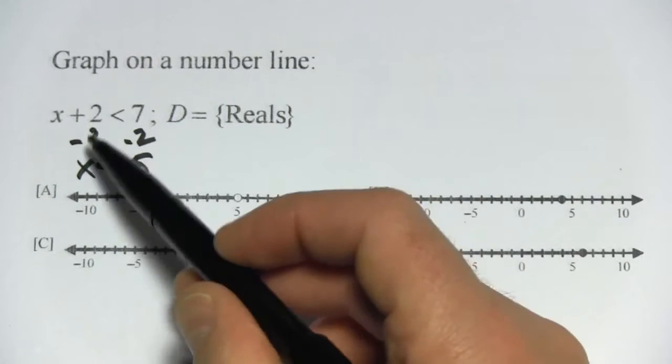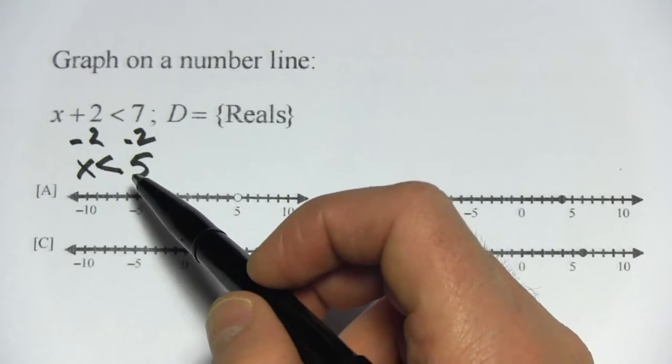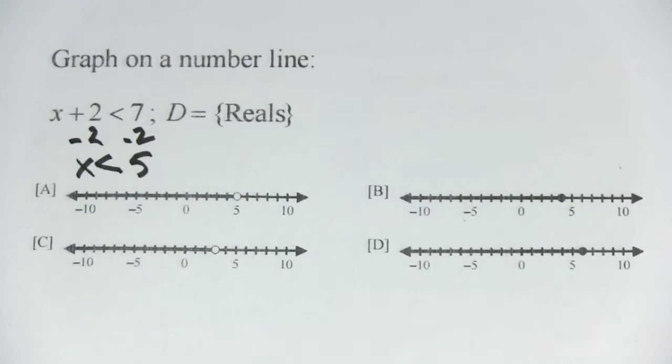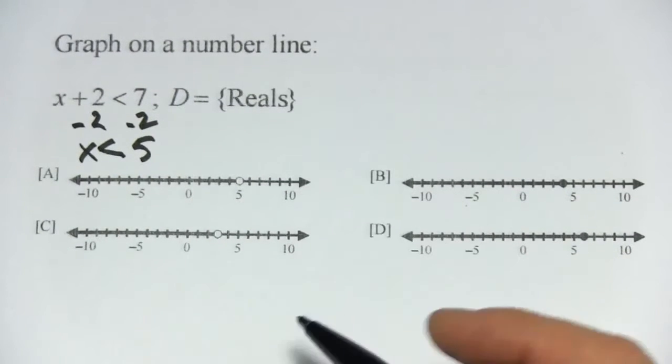You can do as much adding and subtracting as you want on either side of the inequality symbol. You only get in trouble if you try to multiply or divide by negative numbers. We'll get into that later. For right now, adding and subtracting to solve for x is totally fine, just like you would with an equation.